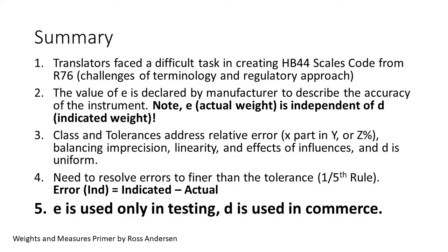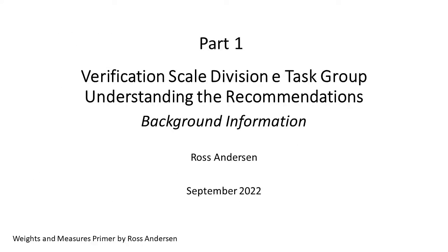Point five: E is a tool only for testing, not the object of the test. Test loads and tolerances in R76 Table 6 are in E's. The tests verify the accuracy and consistency of the D's. Once the instrument is verified as compliant, the weight indication of the instrument in D's is used in commerce. This brings my discussion of fundamentals in Part 1 to a close. Please come back for Part 2, where I discuss the task group recommendations, and Part 3, where I'll discuss two case studies applying the principles of the scales code. Thank you for watching.